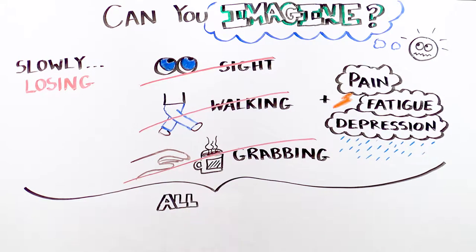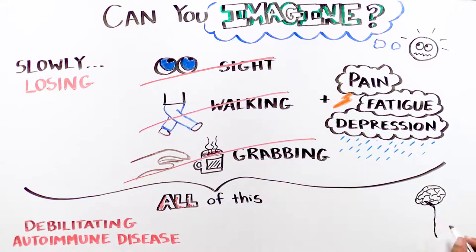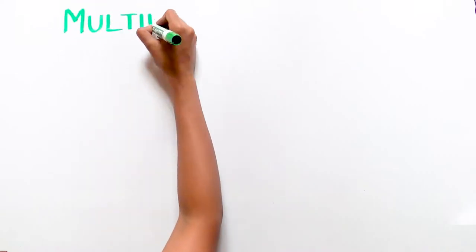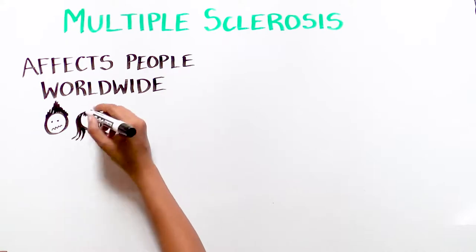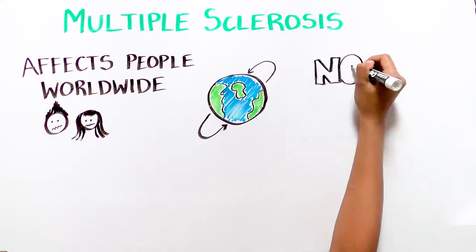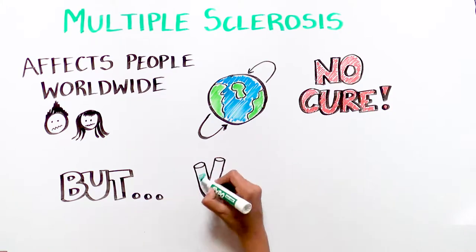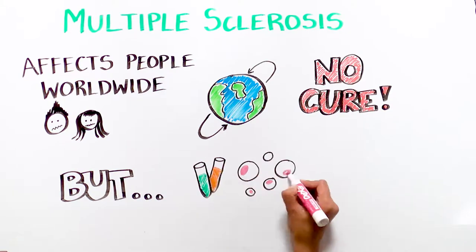These broad symptoms impact the quality of life of patients with a debilitating autoimmune disease that affects the brain and spinal cord called multiple sclerosis, MS. MS affects many people worldwide, including young adults. Unfortunately, there is no cure for MS, but researchers are working hard to develop strategies to combat this devastating disease.